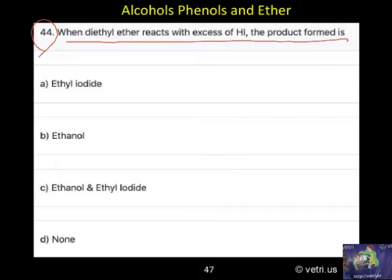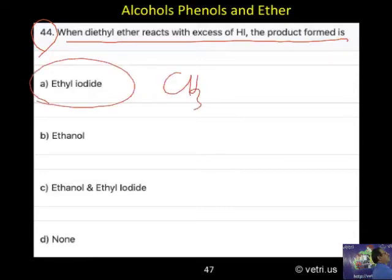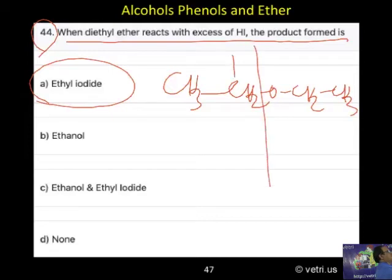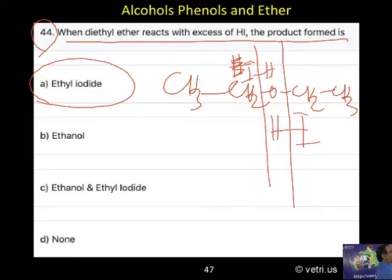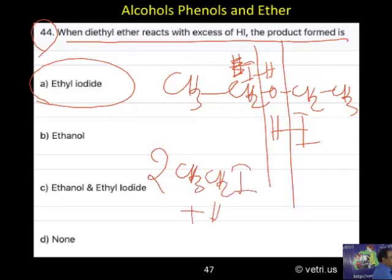When diethyl ether is treated with excess of HI — that is, two molecules of HI — two molecules of ethyl iodide and one molecule of water will form.